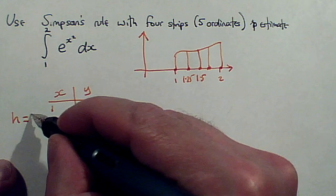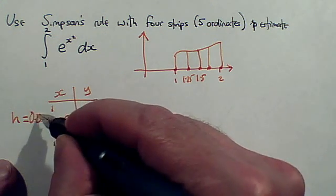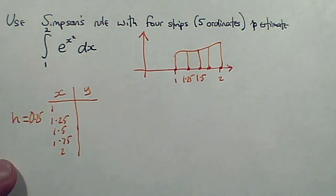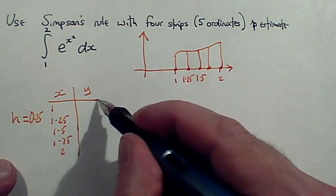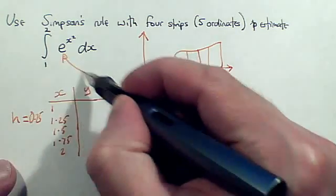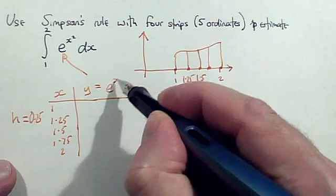And my h, the width of the strip, is 0.25. Okay, now I've got to calculate the y values. Well, this bit here is my equation for y. y equals e to the power x squared.